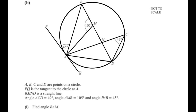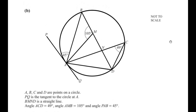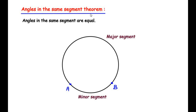In this question a circle is given and points A, B, C, D are marked on the circumference. PAQ is a tangent making an angle of 45 degrees with chord AB. To find angle BAM, we make use of the angles in the same segment theorem, which states that angles in the same segment are equal.